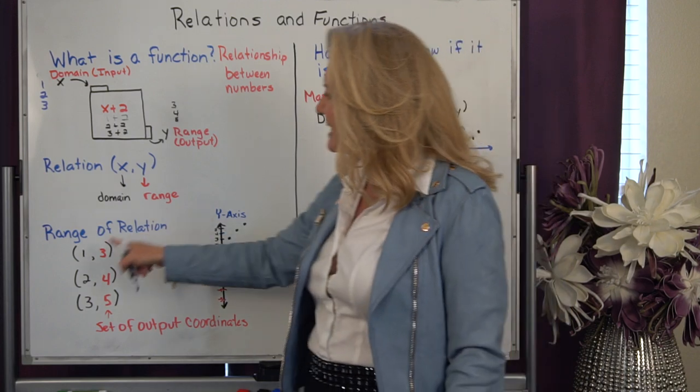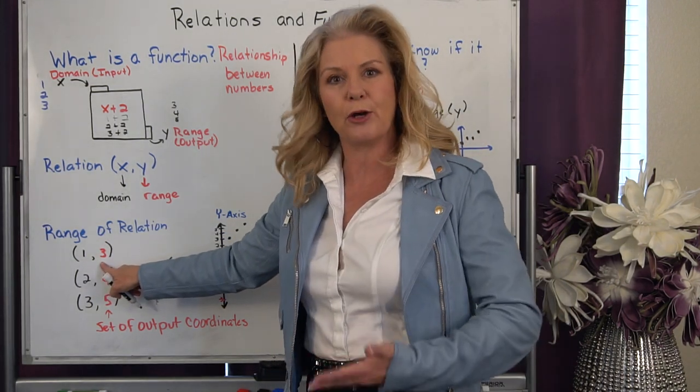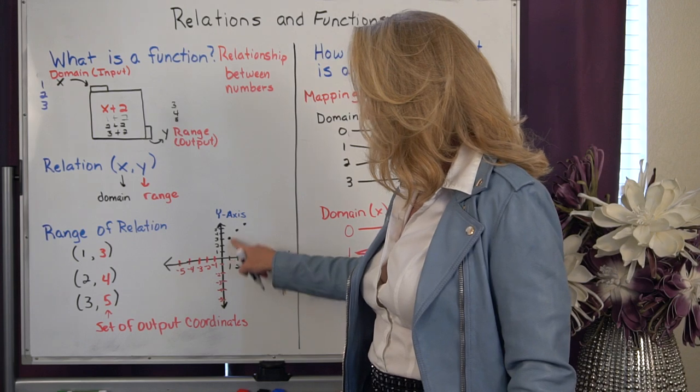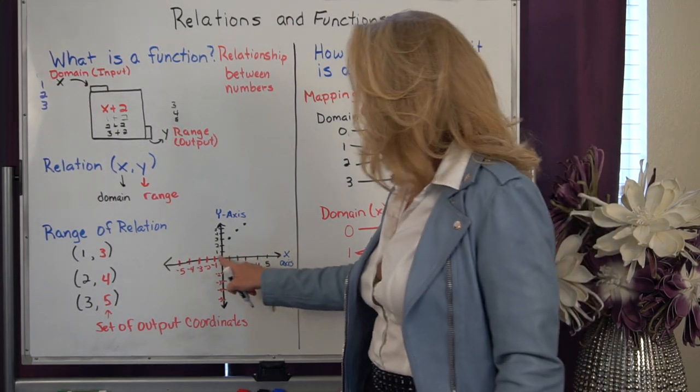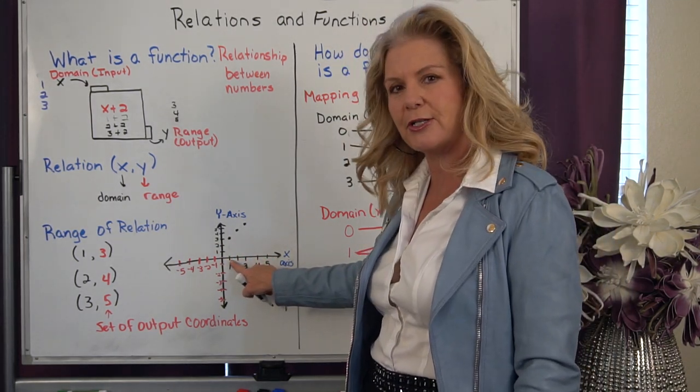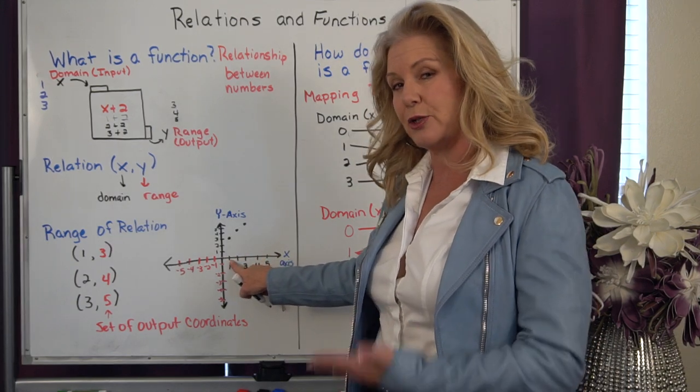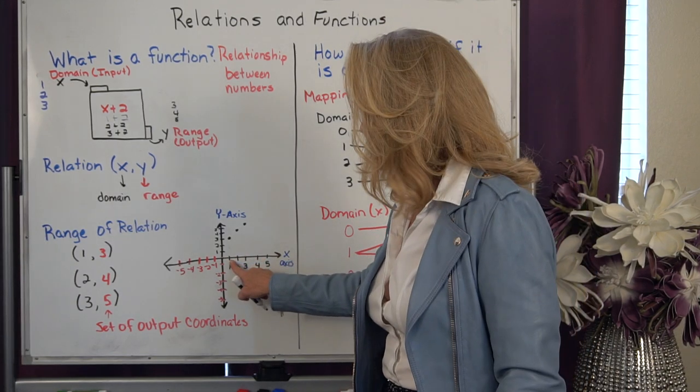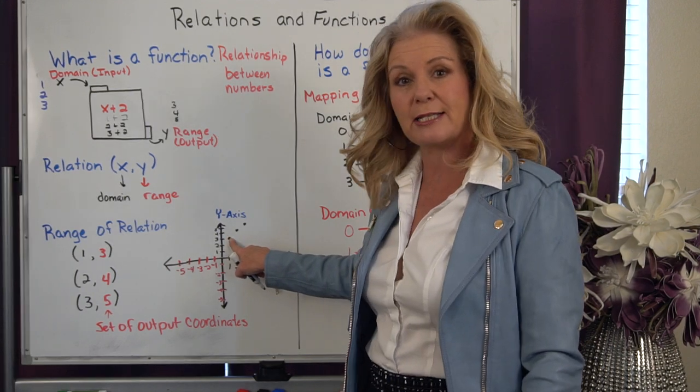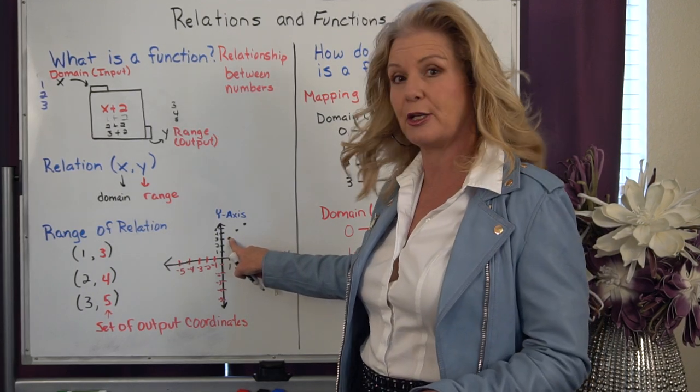So when I take my input and the output that it has a relationship with, I can go ahead and graph. And remember, we always do our x value first. And we find our place on that number line for the x. Then we do our y value second. So we go up to what that value is for that particular point.